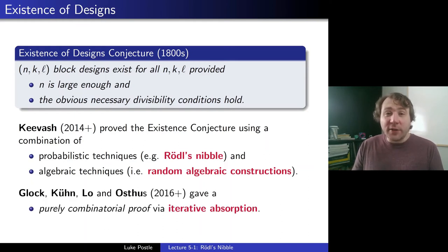Now that was followed up with another result of Glock, Kühn, Lo and Osthus, starting in 2016, that gave a purely combinatorial proof of this via so-called iterative absorption. So we now have two different proofs of the existence conjecture. The first one a mix of probabilistic and algebraic techniques, the second purely combinatorial.